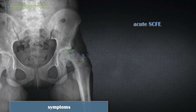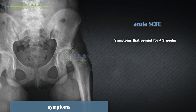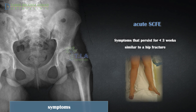Acute slips: children with acute slips have symptoms of less than three weeks duration. Acute traumatic slips may occur following major trauma, such as a fall from height or motor vehicle accident. Symptoms include onset of severe pain, external rotational deformity, limited range of motion of the hip, shortening, and commonly inability to bear weight. The patient complains of intense pain with any attempt at passive motion.